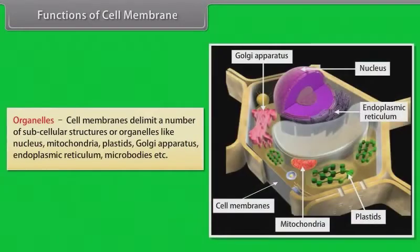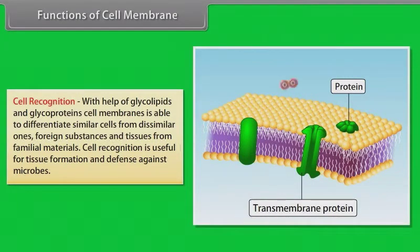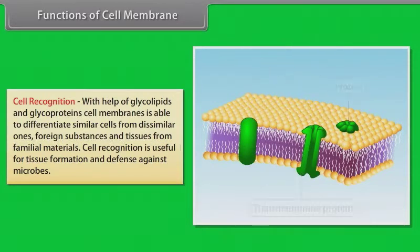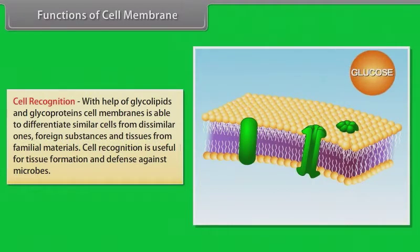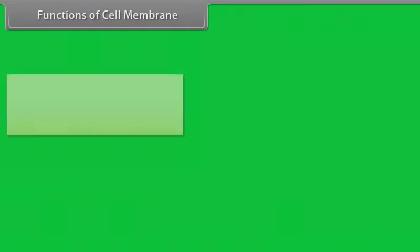Organelles: cell membranes delimit a number of subcellular structures or organelles like nucleus, mitochondria, plastids, Golgi apparatus, endoplasmic reticulum, microbodies, etc. Cell recognition: with the help of glycolipids and glycoproteins, the cell membrane is able to differentiate similar cells from dissimilar ones, foreign substances and tissues from familiar materials. Cell recognition is useful for tissue formation and defense against microbes.